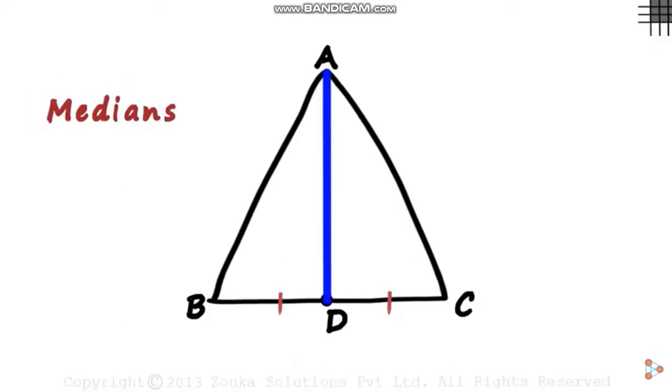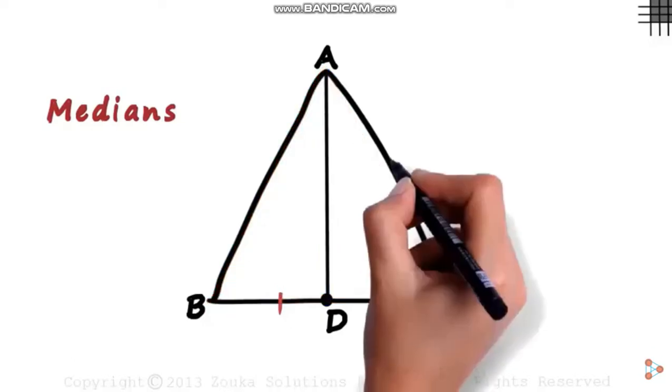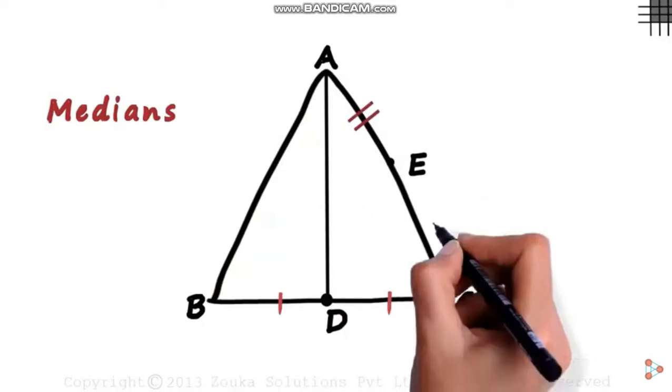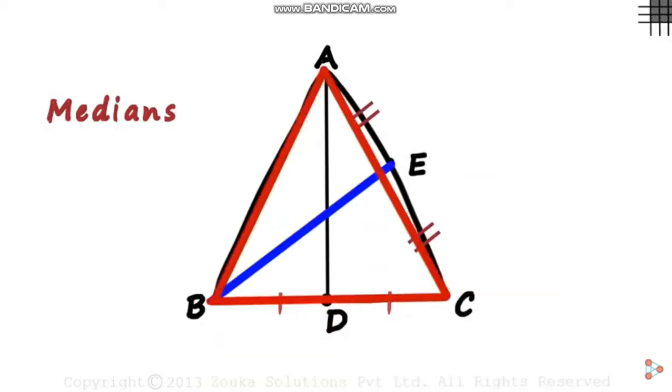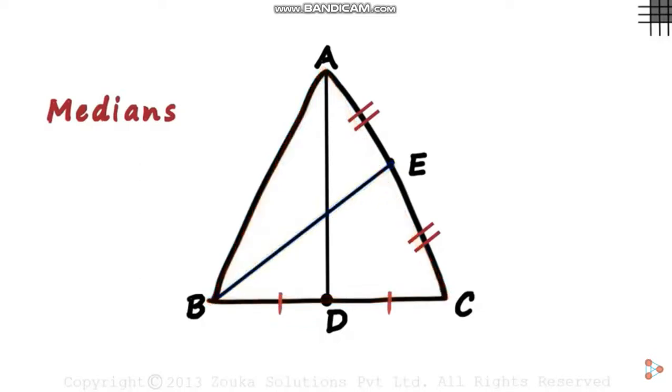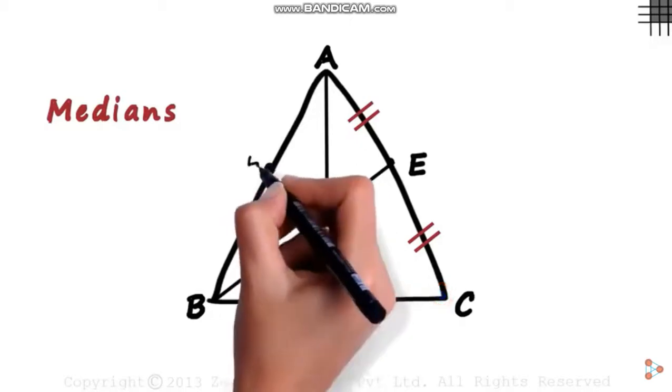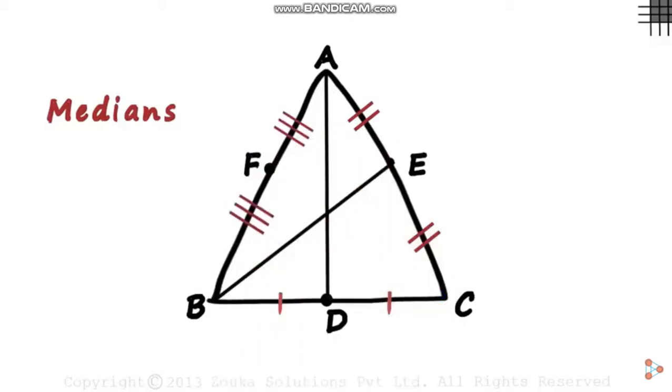Similarly, if E is the midpoint of segment AC, then BE is another median of the triangle. Now we have the median from point C. F is the midpoint of AB, so segment CF is the third median of the triangle. We can see that all three pass through one point.